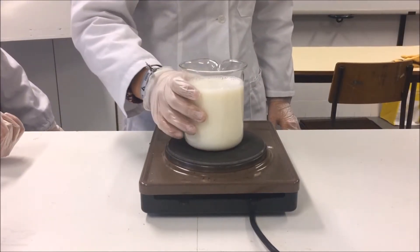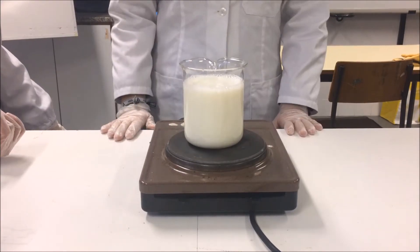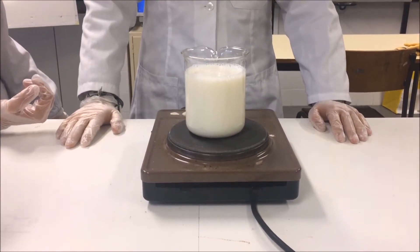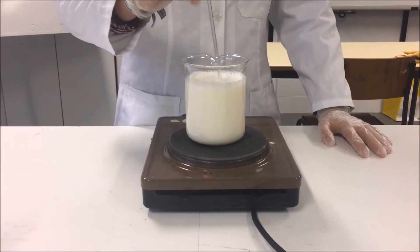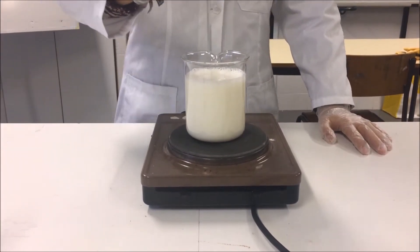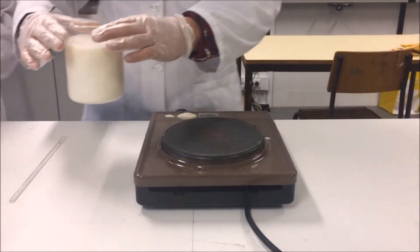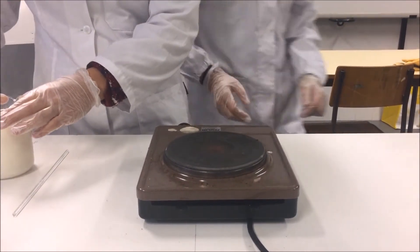Place the beaker with the milk on the heating plate and wait for the temperature to rise without boiling, stirring continuously with the glass rod so that the milk is heated evenly. To avoid burns, remove the beaker carefully from the heating plate.